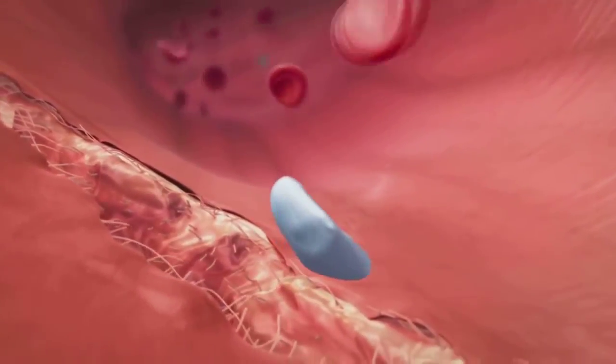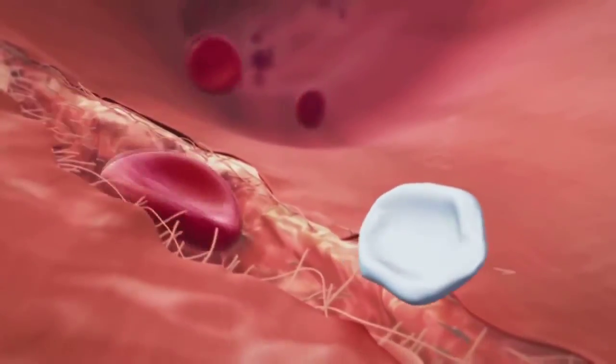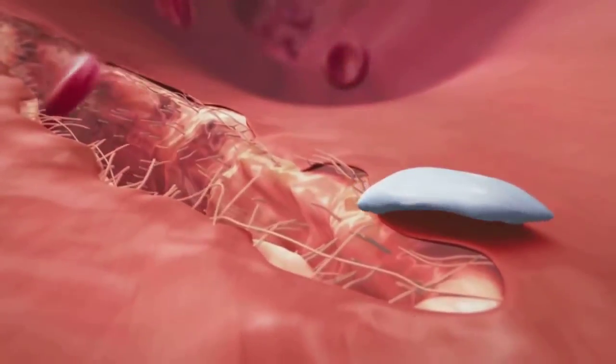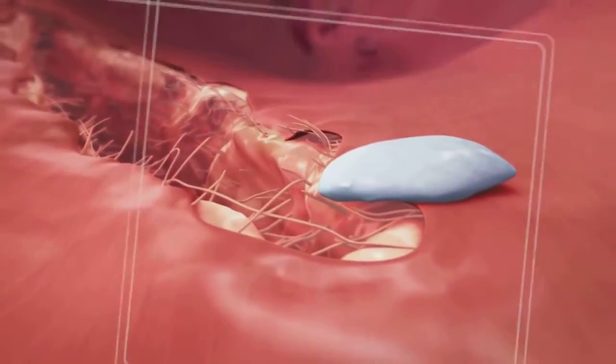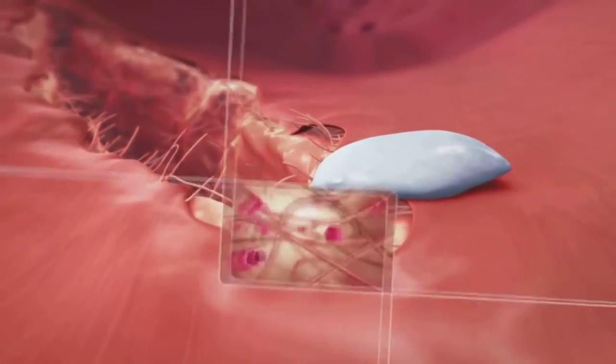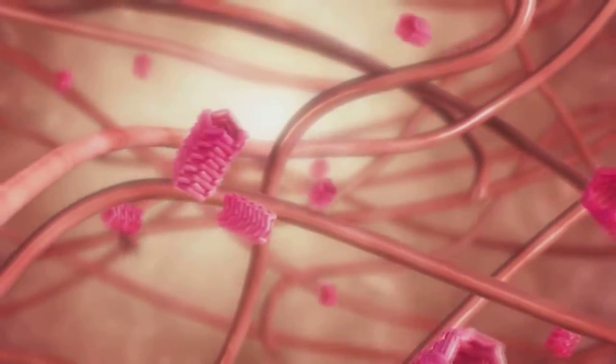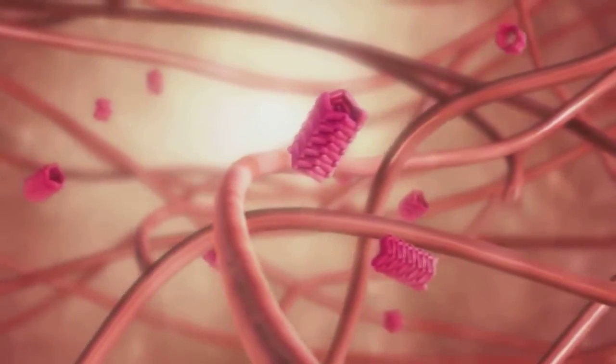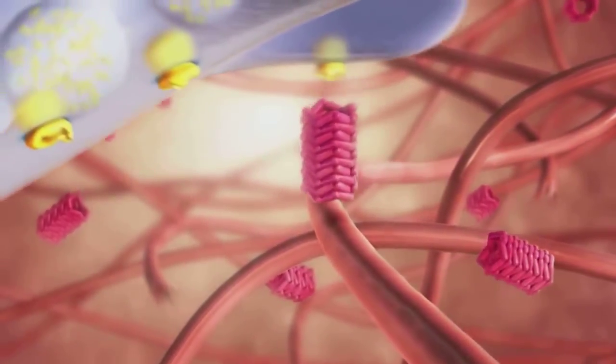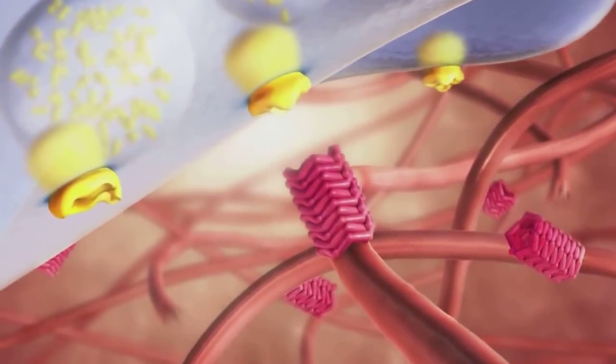In a first step towards clot formation, platelets are recruited to the site of vessel injury by now exposed molecules of the vessel wall, such as collagen and von Willebrand factor. This factor mediates the linking of platelets to collagen via a specific receptor in the platelet membrane.